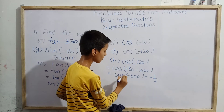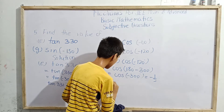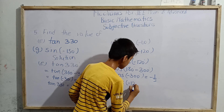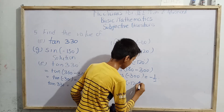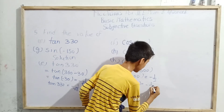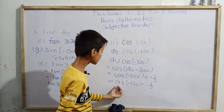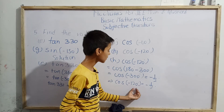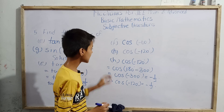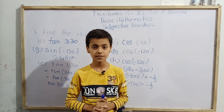We know cos(-300°) = -1/2. Since cos(-120°) = cos(-300°), we get cos(-120°) = -1/2. That is the final answer for part h. That was today's topic — thank you.